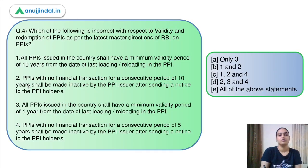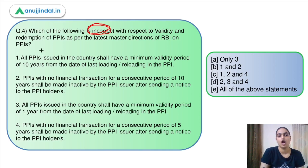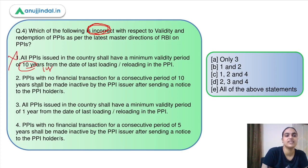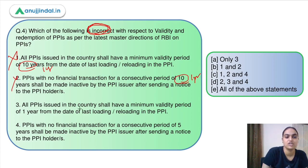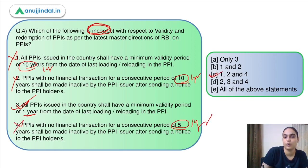Moving to the last question — identify the incorrect statement with respect to validity and redemption of PPIs as per the latest master directions. Statement one: all PPIs will have a minimum validity period of 10 years — incorrect, it is 1 year. Statement two: PPIs with no financial transaction for 10 years will be made inactive — incorrect, it is 1 year. Statement three: PPIs will have a minimum validity of 1 year — correct. Statement four: PPIs with no financial transaction for 5 years will be made inactive — incorrect, it is 1 year. So the incorrect statements are one, two, and four, making the answer option C.